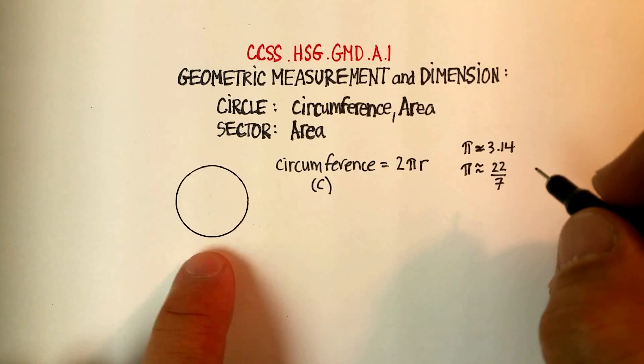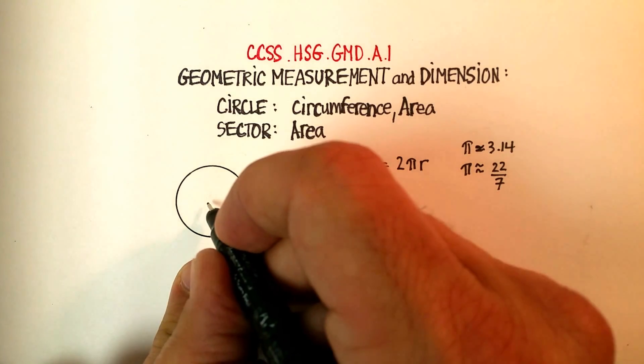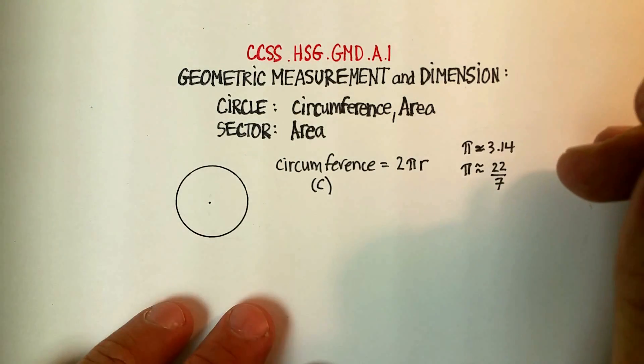So just 2 times pi times the radius, which again is the distance from the center of the circle to the edge of the circle.